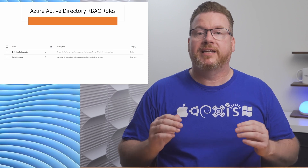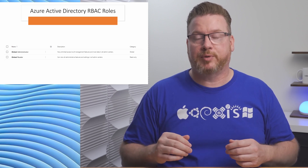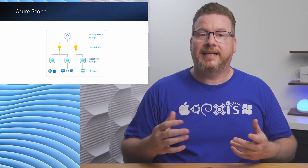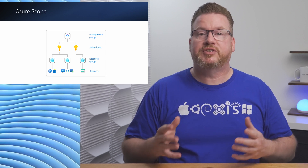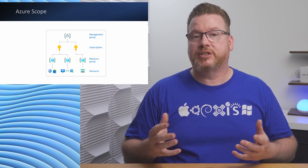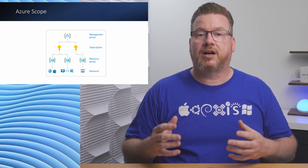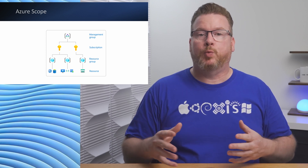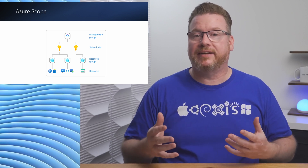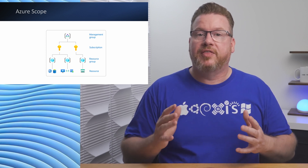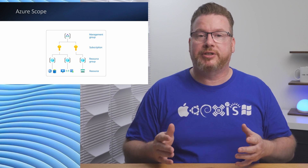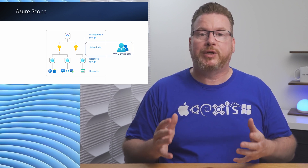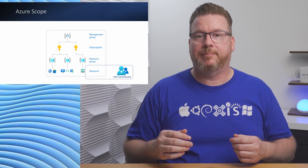We also have a Global Admin and Global Reader role. Global Admin has rights to access and manage everything at the Azure AD scope, including setting permissions. Azure subscriptions are another scope — technically, Azure management groups, subscriptions, resource groups, and resources are all scopes we can apply RBAC roles to. For example, we can assign a security principal such as a group the Virtual Machine Contributor role at a management group, subscription, resource group, or a specific VM.